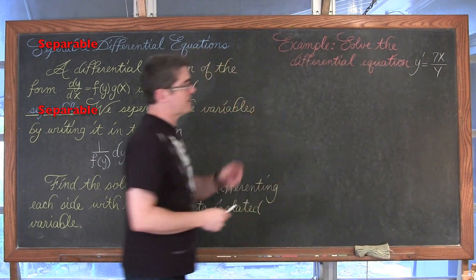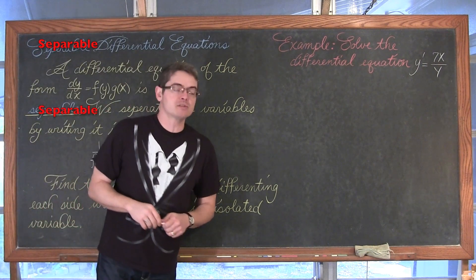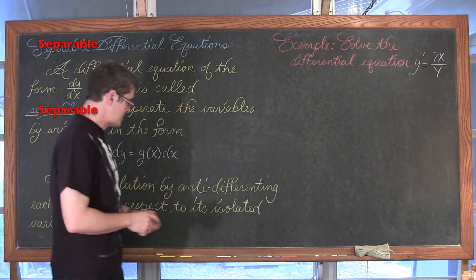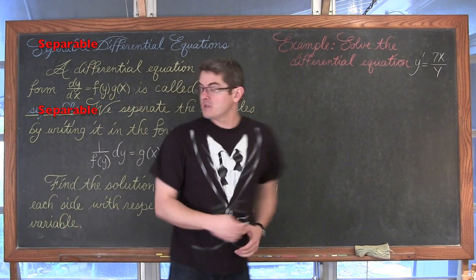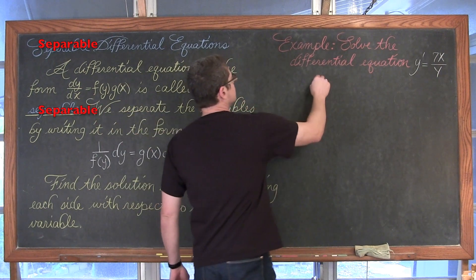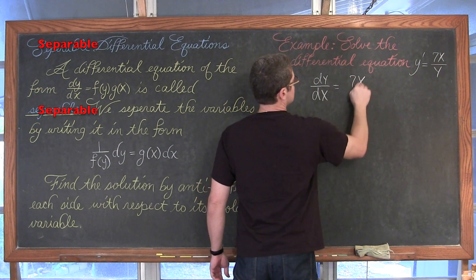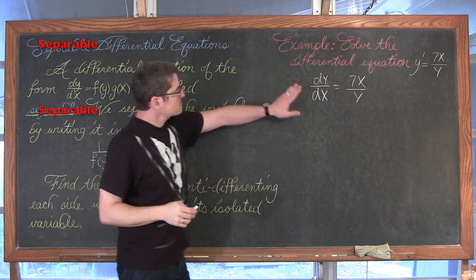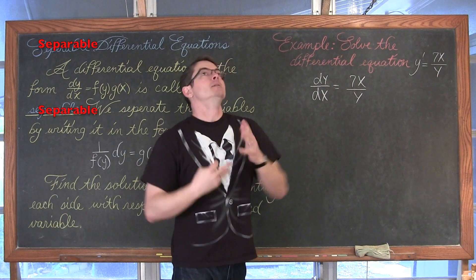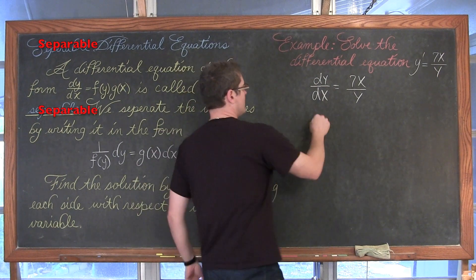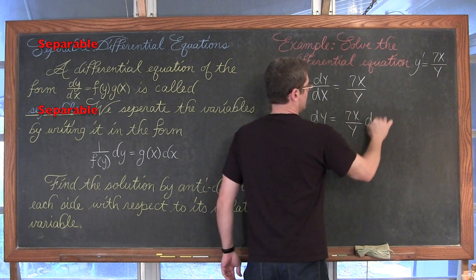Our first example: we want to solve the differential equation y' equals 7x over y. This one is going to be a fairly simple example. We are going to rewrite y' as dy/dx, so dy/dx equals 7x over y. We are going to move the dx over to the other side — it appears to be division, so we move it over with what appears to be multiplication — and we have dy equals 7x over y dx.